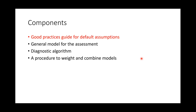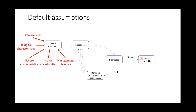Now let's get to the first component of the expert system: the good practices guide to determine the default assumptions. The default assumptions will be determined based on a number of factors including the data available, the biological characteristics of the stock, the fisheries characteristics, any major uncertainties in our understanding about the system, and possibly the management objectives, because different models may perform better or provide advice on different management objectives. There might also be multiple sets of default assumptions because our knowledge is not complete.